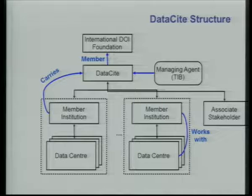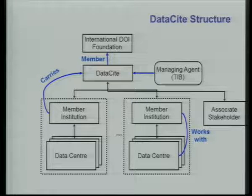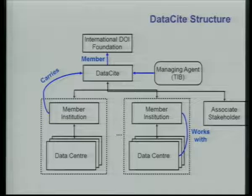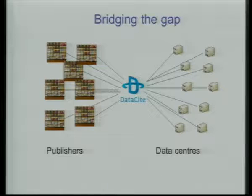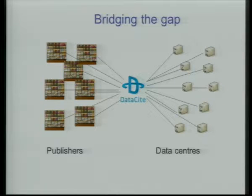This is the structure. We are a member of the International DOI Foundation, and as such DataCite pays a membership fee, and the member institutions in their turn pay a membership fee to DataCite. The data centers have to contact one of these member institutions to get DOIs. Bridging the gap is the case here — in particular bridging the gaps between publishers and data centers.